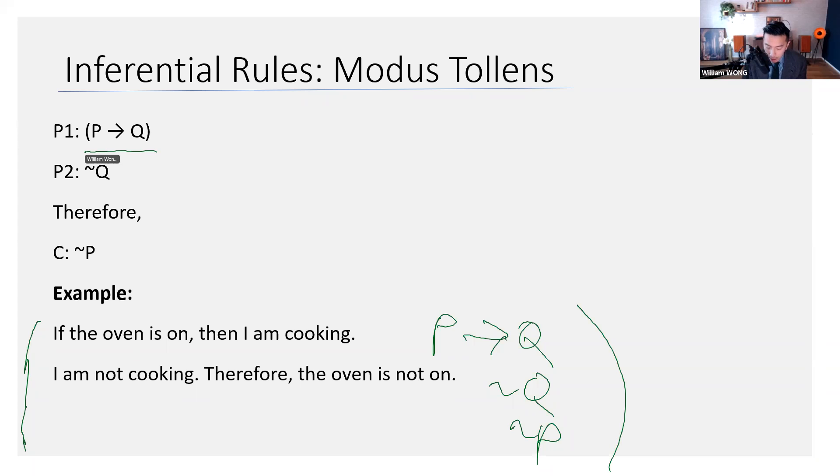Here's the form again. P entails Q. You say not Q, that is not the consequent. Therefore not P. Somebody asked, does it mean that the oven is on only if I am cooking? Let me think about that. If you say the oven is on only if you're cooking, you mean as soon as the oven is on, then you're cooking. So it is the same. This is equivalent to saying oven on only if cooking. Right? P only if Q. And then here it's saying P entails Q as well. Good.